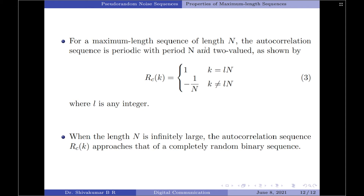Here k represents the lag introduced into the autocorrelation sequence. For a maximum length sequence of length N, the autocorrelation sequence is periodic with period N and two-valued: when the lag k is an integer multiple of the length N, the autocorrelation equals 1; on the other hand, when the lag is not an integer multiple of N, the autocorrelation equals minus 1 divided by N. Note that l only takes integer values.